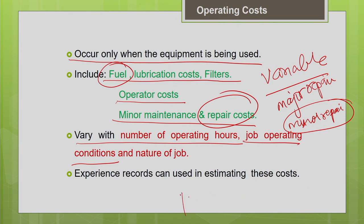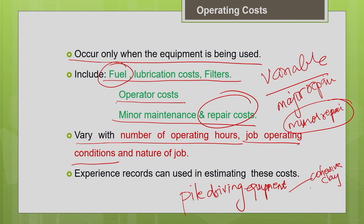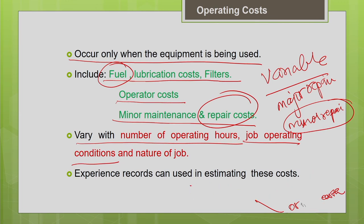Similarly, a pile driving equipment used in cohesive clay versus ordinary earth will incur more operating cost in the clay — more wear and tear, more power and fuel consumption, more repair cost. Operating cost also depends on the nature of the job for which the particular equipment is used.